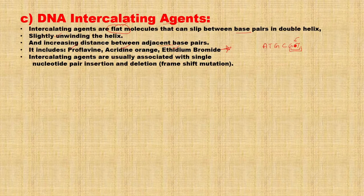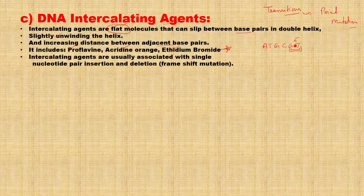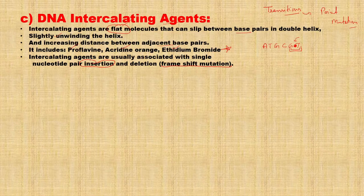Now, what kind of mutations are caused by intercalating agents? These are not simple transitions — we have discussed point mutations — but these DNA intercalating agents cause frameshift mutation. It means that the whole reading frame gets shifted. This frameshift mutation can be due to the insertion of the intercalating agent, or it can be due to deletion.